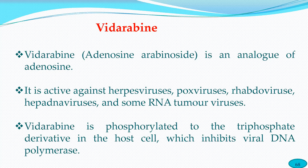Vidarabine — also called adenosine arabinoside or Ara-A — is an analog of adenosine. It is effective against herpes virus, pox virus, rhabdovirus, herpesviruses, and some RNA tumor-inducing viruses. Hepatitis B and C viruses can convert normal tissue into cancerous tissue causing hepatocellular carcinoma. Vidarabine needs to be phosphorylated to its triphosphate or monophosphate form to become active.